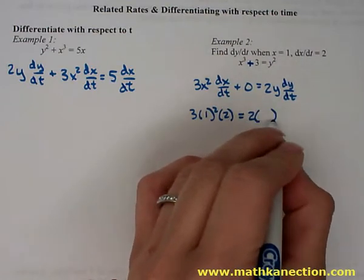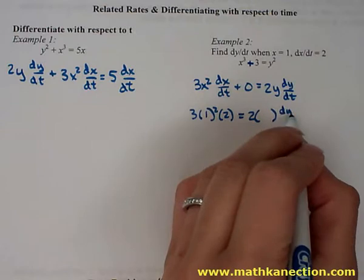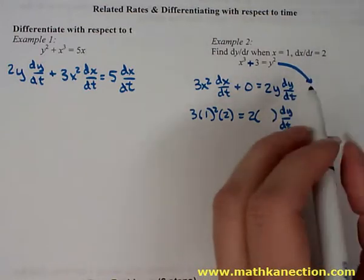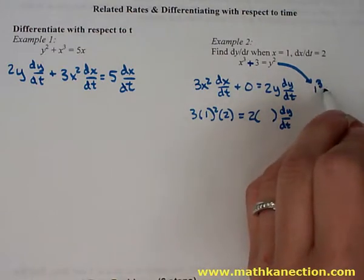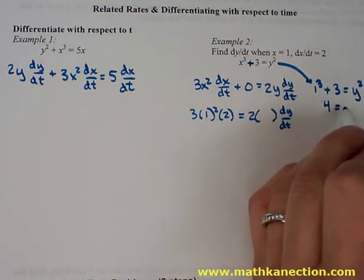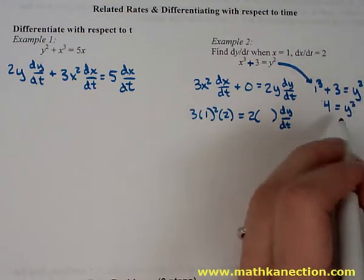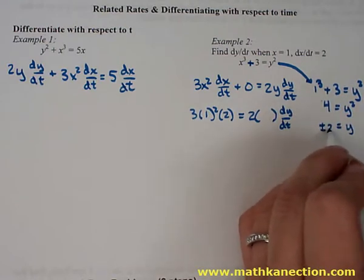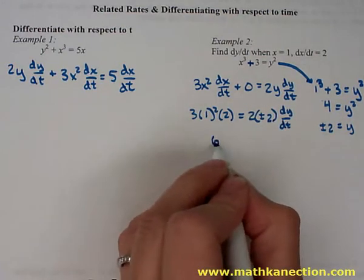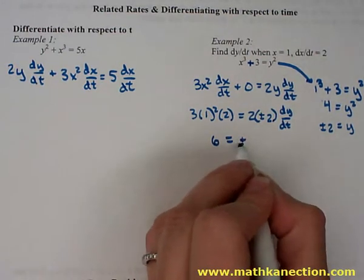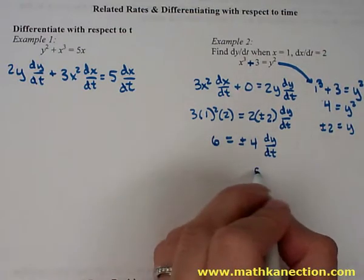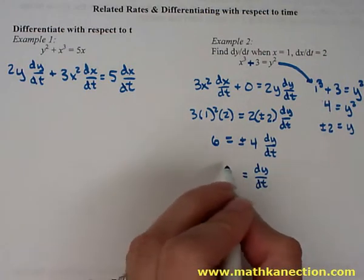And y, well, we don't have a y value, so we have to go back to the original equation. Substituting in x, we can find out that the y value is equal to plus or minus 2. So we're placing that back into the function. Now we can calculate and solve for dy/dt. So we get dy/dt is equal to positive or negative 3 halves.